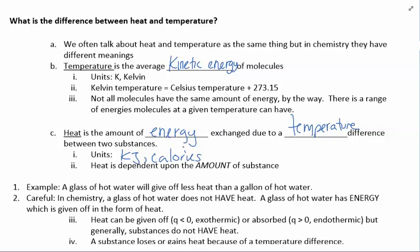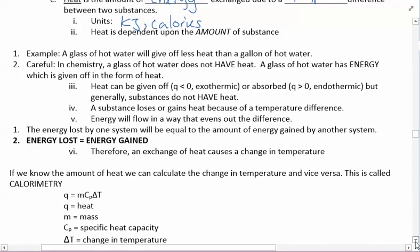Let's look at an example. A glass of hot water will give off less heat than a gallon of hot water. In chemistry a glass of hot water does not have heat. A glass of hot water has energy which is given off in the form of heat. Heat can be given off or absorbed but generally substances do not have heat. A substance loses or gains heat because of a temperature difference. Energy will flow in a way to even out the difference. The energy lost by one system will be equal to the amount of energy gained by another system. Energy loss is equal to energy gained. Therefore an exchange of heat causes a change in temperature.